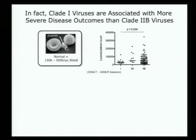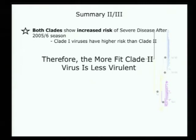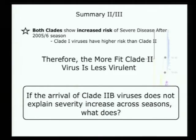Interestingly, it looks like the clade 1 viruses might actually be more severe. Looking for instance at low platelet count, there is a significantly lower platelet count with clade 1 viruses than with clade 2. Using multivariate analyses, clade 1 versus 2b actually shows that clade 1 may be more severe. So we've shown there's increased risk in general, and the clade 2s, even though they're winning in the fitness sense, are actually not the ones that are potentially the most virulent. If it's not the clade story, then what is driving this increase in disease severity?